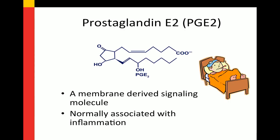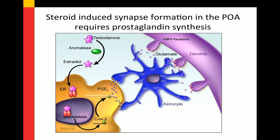It was one single prostaglandin — PGE2 — the prostaglandin that gives you a fever and aches and pains, what you take aspirin and Tylenol for. Stuart Amato, through a series of thesis studies, discovered that estradiol, after being aromatized from testosterone, binding to the estrogen receptor will upregulate the cyclooxygenase enzymes COX-2 and COX-1 to create PGE2, which is released from neurons, acting on neighboring astrocytes through a calcium-dependent mechanism causing glutamate release, which activates AMPA receptors on neighboring dendrites. That was where our story stood circa 2004.